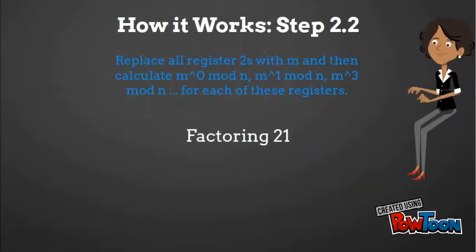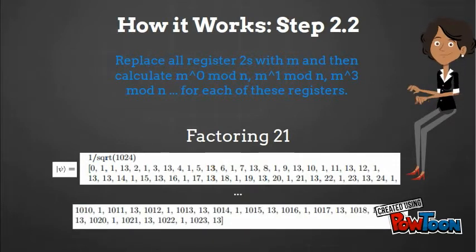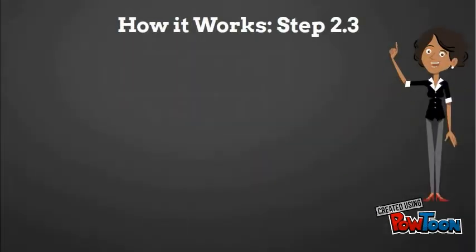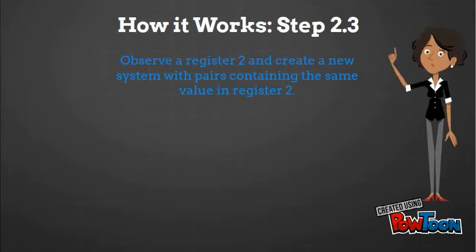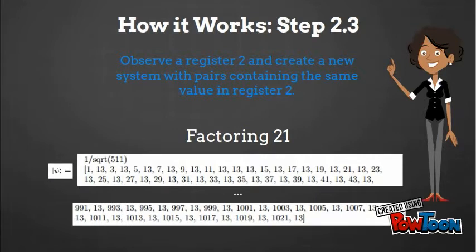Jackie then adds a copy of m found by Joe to each register 2 and raises it to the power of the corresponding register 1 mod n. The next step is to measure the second register and observe its state. Each base state is equally likely to be measured. This measurement projects the original state into a subspace filled with other base states that share the same observed value. In her factoring of 21, Jackie observes the state 13.